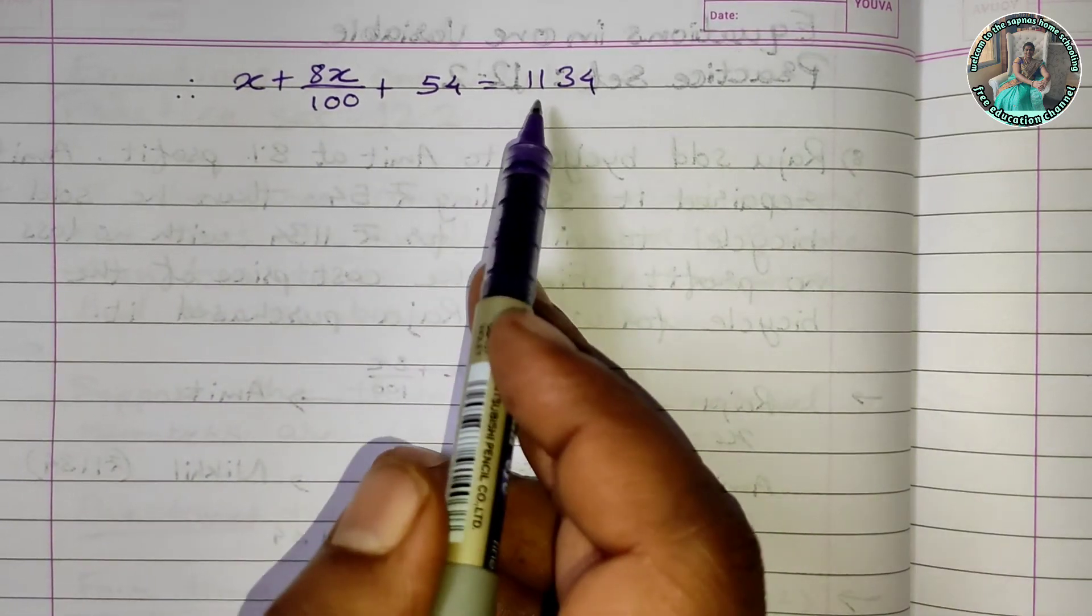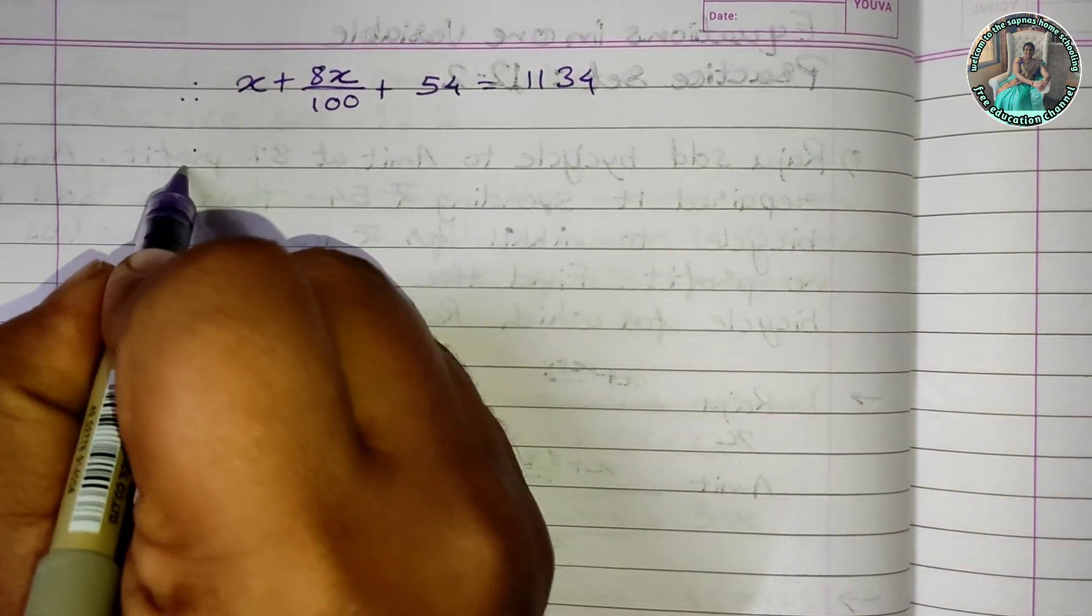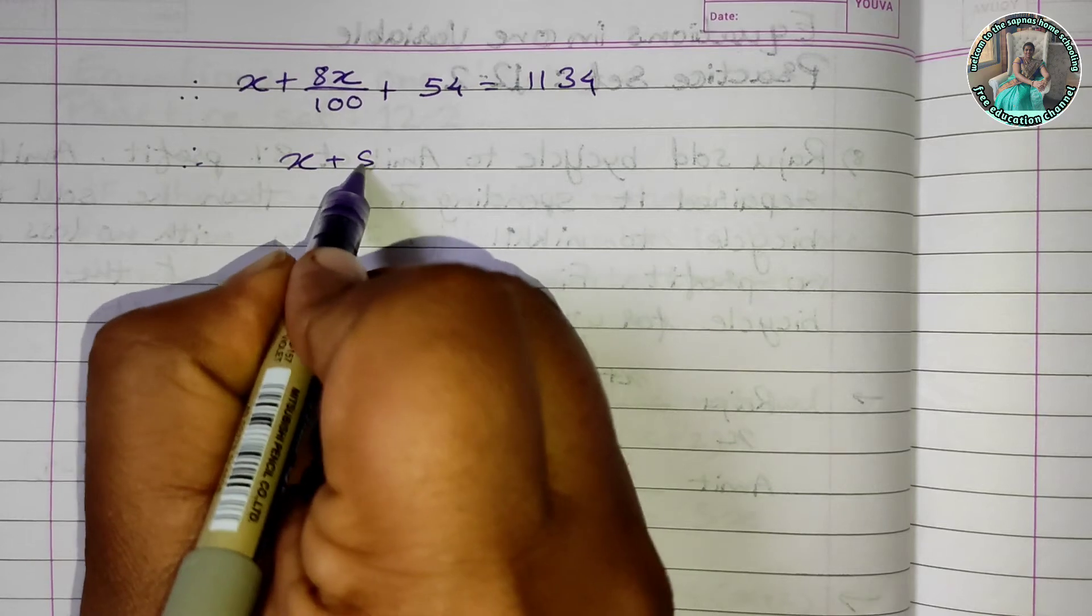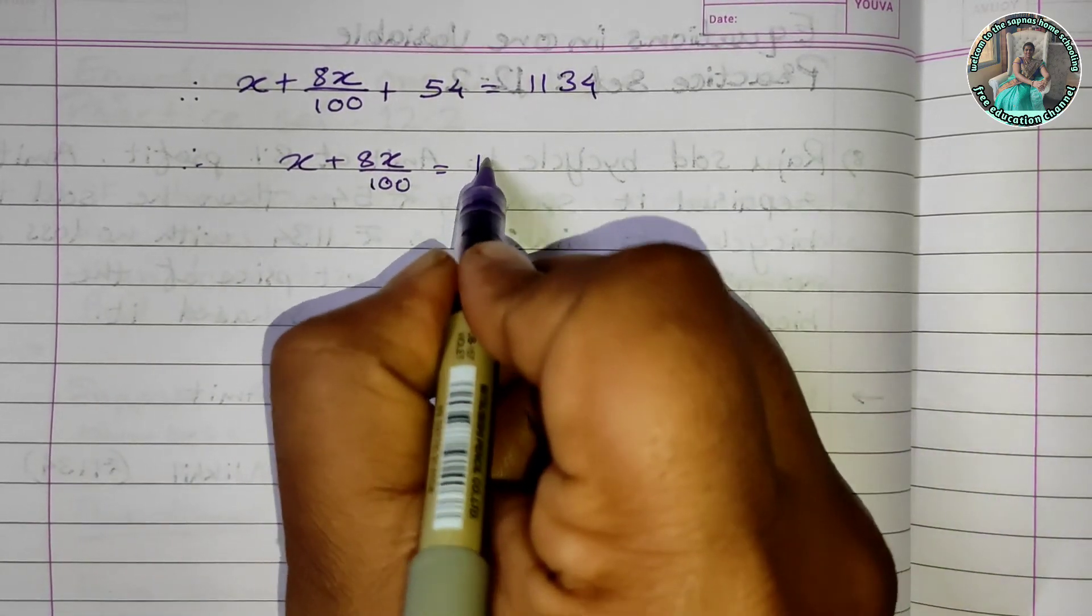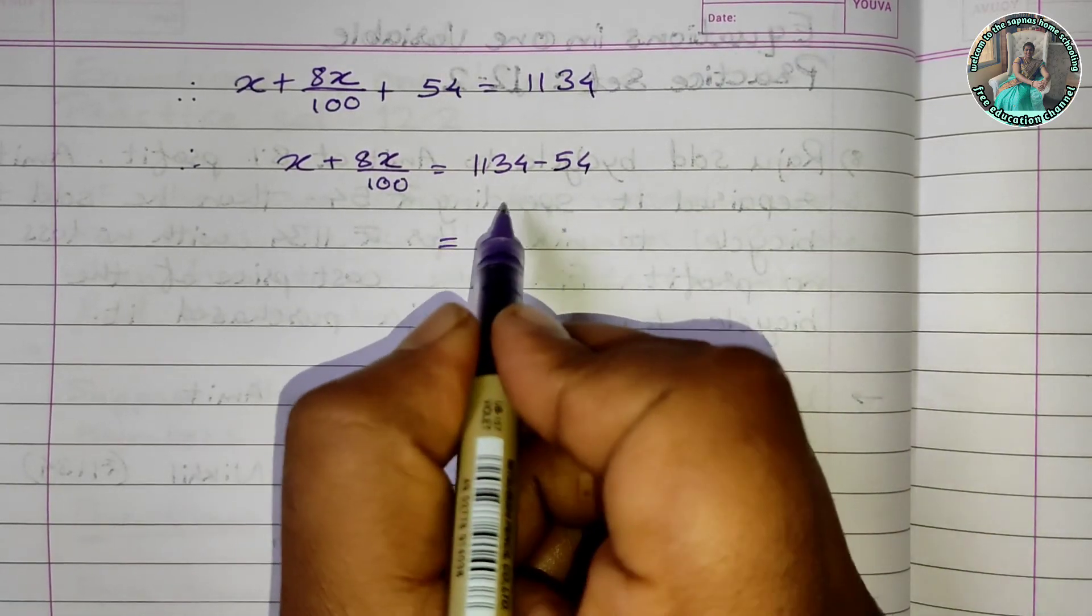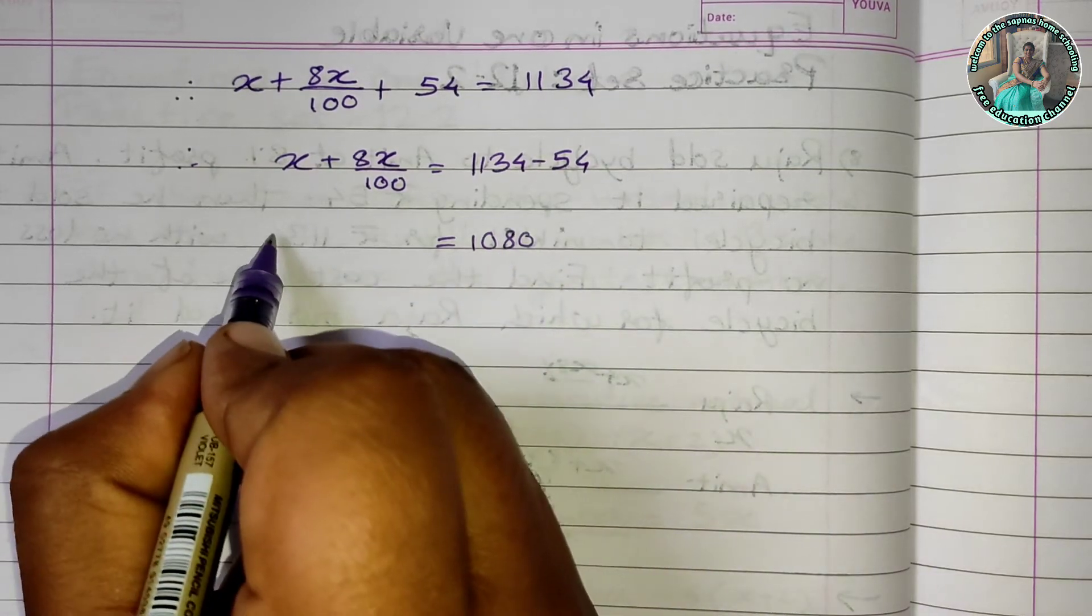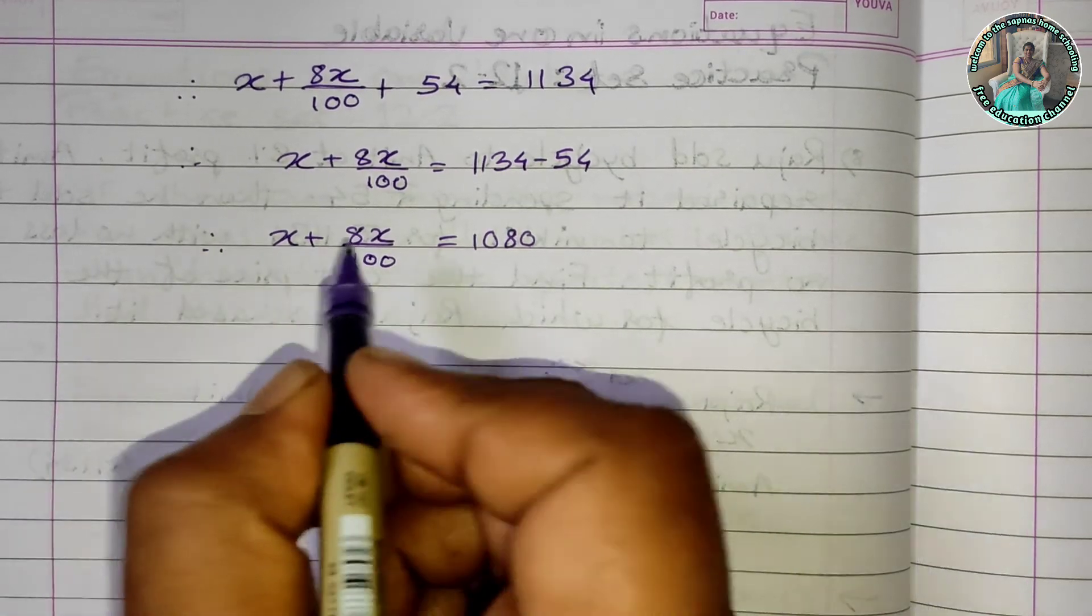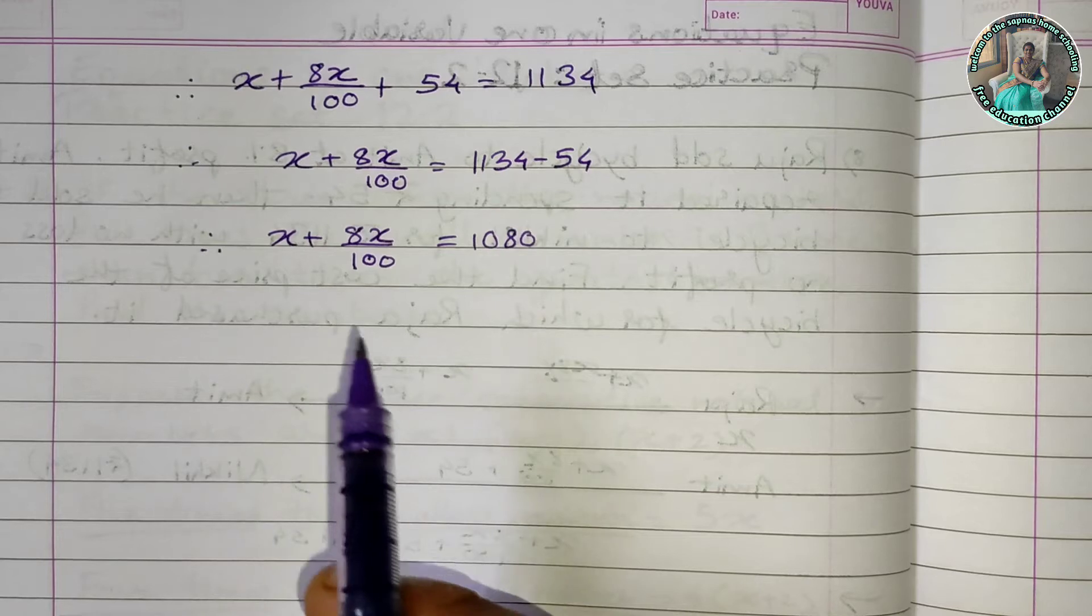This equals 1134. So x plus 8x upon 100 plus 54 equals 1134. Taking 54 to the other side, x plus 8x upon 100 equals 1134 minus 54 equals 1080.